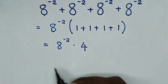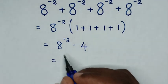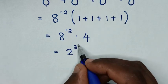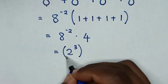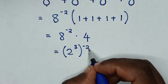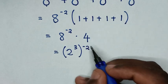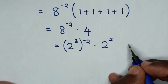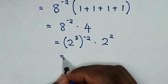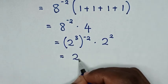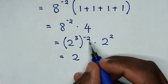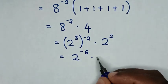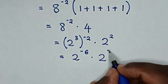In the next step, it will be equal to: 8 is the same as 2 power of 3, then bracket power of negative 2, times 4 which is the same as 2 power of 2.